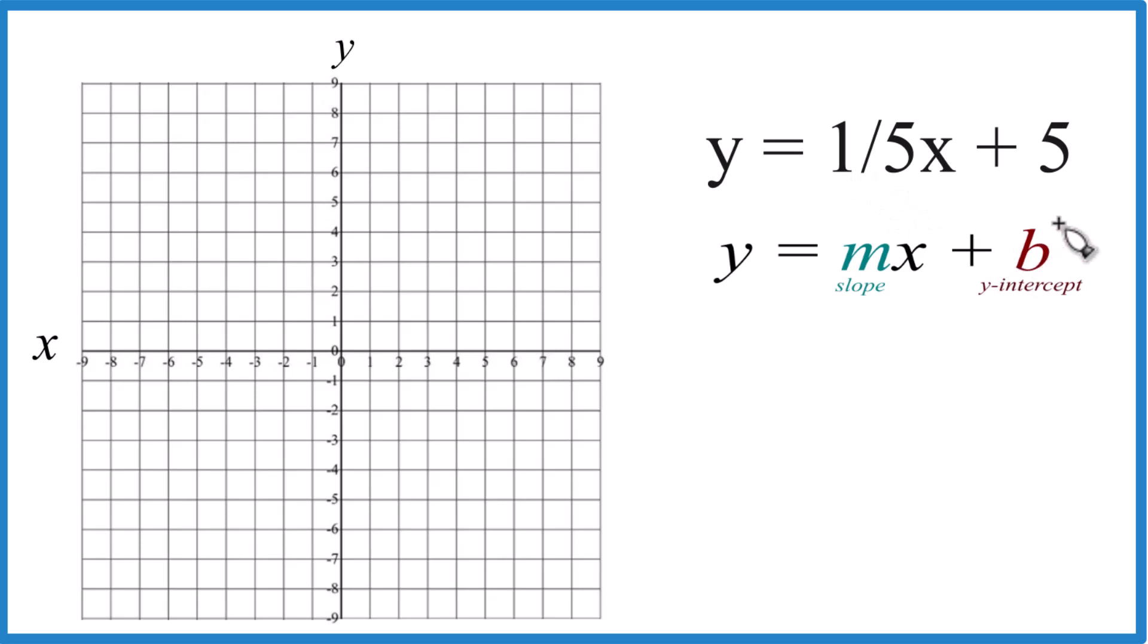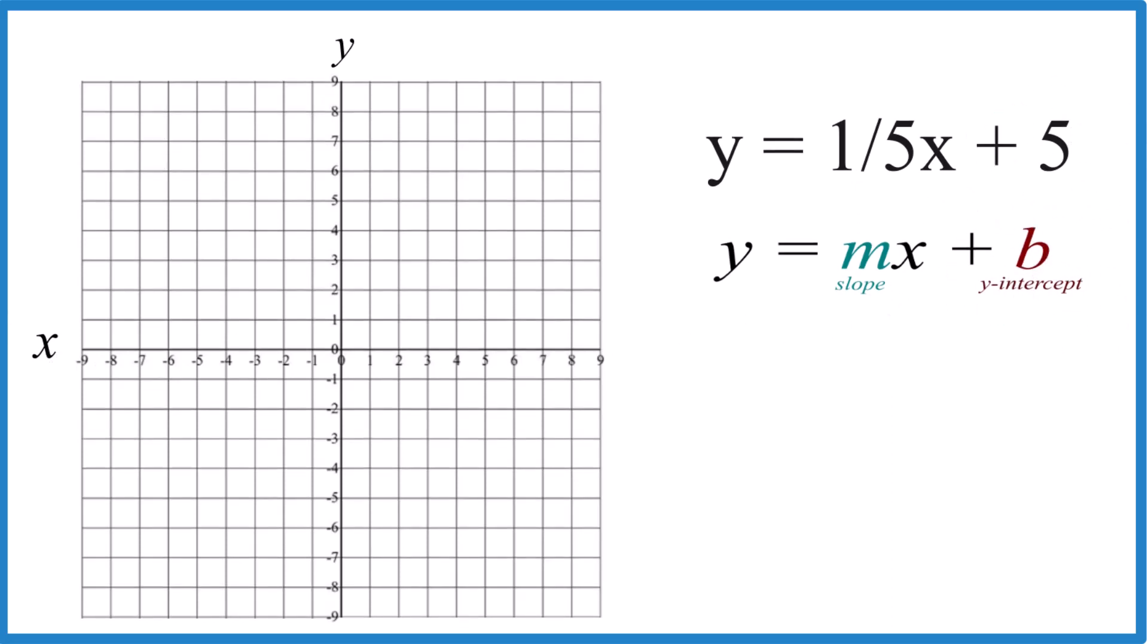This is probably easier, though, because you have the y-intercept here. That's five. So we just go to the y-axis and put a point right here at five on the y-axis, and that's where we're going to cross the y-axis.